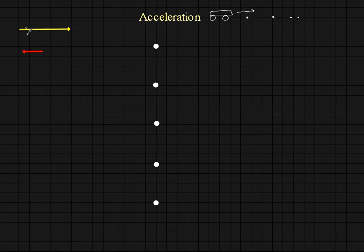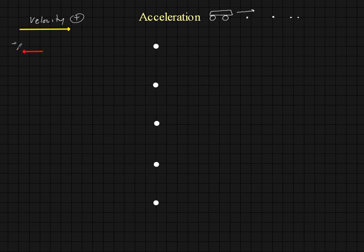We're going to represent velocity vectors using a yellow arrow — this represents velocity. The acceleration is going to be shown with a red arrow. Because velocity points to the right, it is positive. And because acceleration points to the left, it's going to be negative.